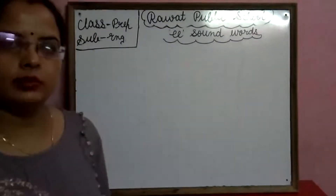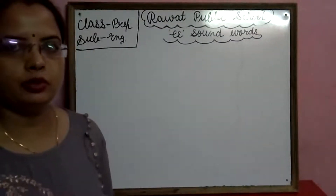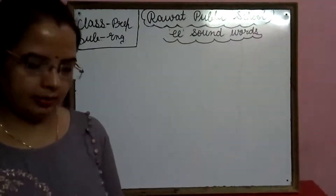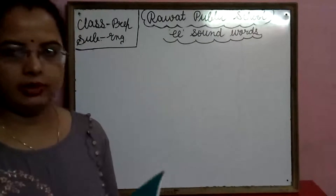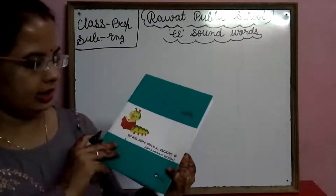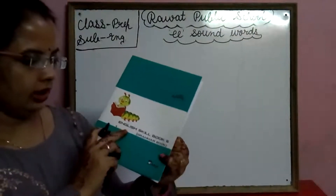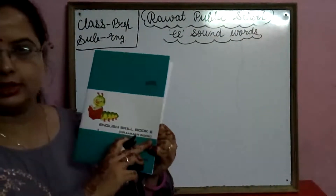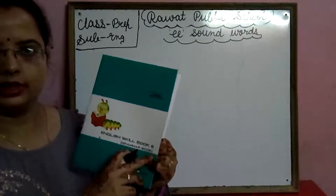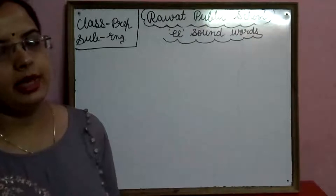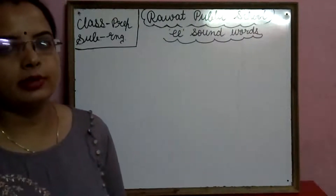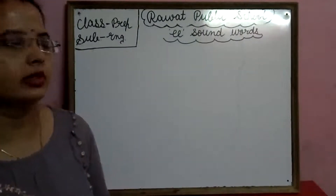Today we will start our new book — English school book 6. We will start the double E sound words.